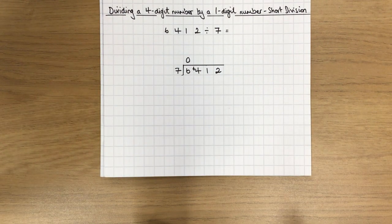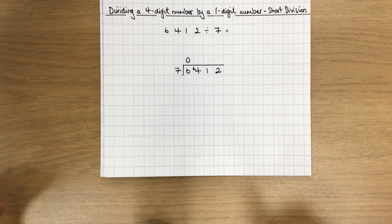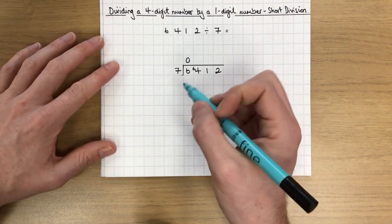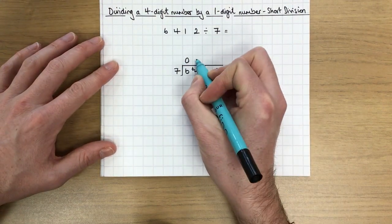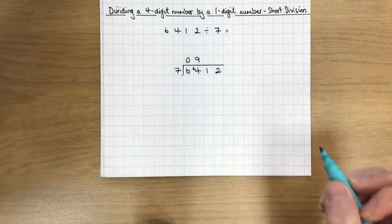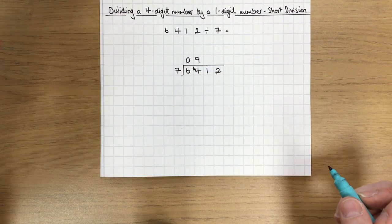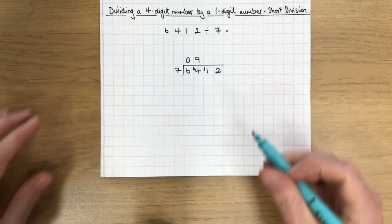7 into 64, if I use my times tables knowledge, I know that 7 times 9 is 63. So it's 9. I'm going to write my 9 there, but I do have 1 to carry forward from 63 to 64.